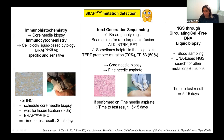A third option is to perform NGS through circulating cell-free DNA liquid biopsy. This strategy requires only a simple blood sampling. DNA-based NGS allows the search for other mutations and sometimes fusions. The time to test results is also 5 to 15 days.